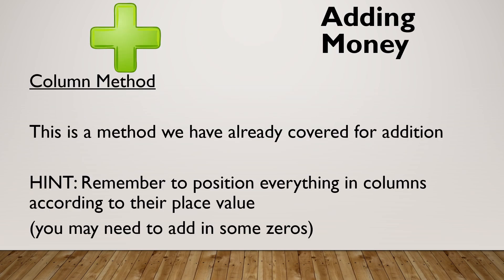When we are adding money, it's the column method we use. We've used this before for addition of whole numbers, so if it's something you're unsure of please go back and check out that video. Don't forget to position everything in columns according to their place value — we want to line those decimal points up, and we may need to add some zeros in to make everything the same size.